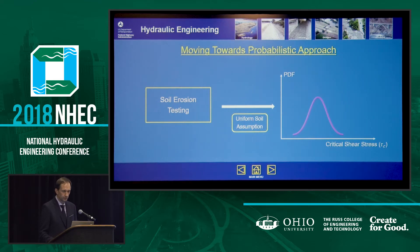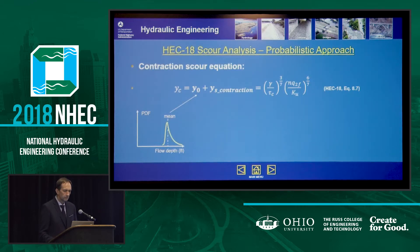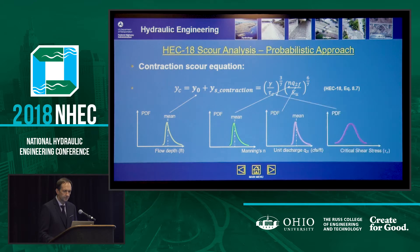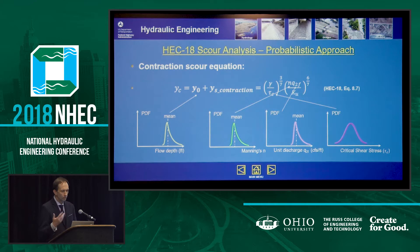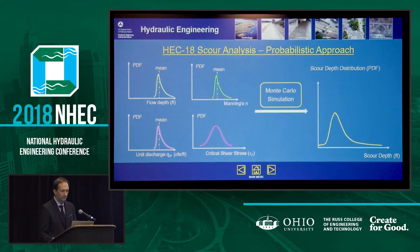You also need a distribution of your critical shear, which can be obtained through soil testing. Then instead of plugging in single numbers, you plug in all these distributions and end up with a scour distribution.